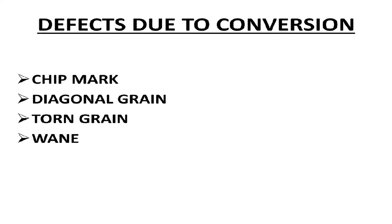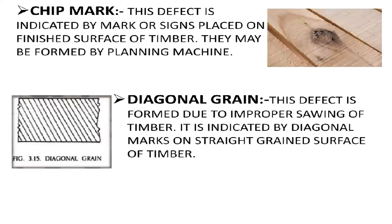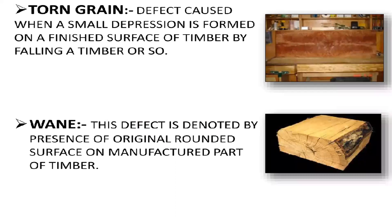Defects due to conversion include: chip mark, diagonal grain, torn grain, and wane. Chip mark: this diagram shows the chip mark defect, which we can see very often in most building places. This defect is indicated by marks or signs placed on the finished surface of the timber, and it may be formed by a planning machine during surface polishing. Diagonal grain: this defect is formed due to improper sawing of timber and is indicated by diagonal marks on the straight grain surface. Torn grain: a defect caused when a small depression is formed on a finished surface of timber. Wane: this defect is denoted by the presence of the original rounded surface of the manufactured part of timber.